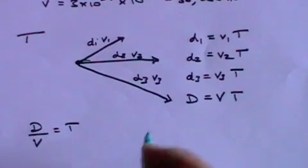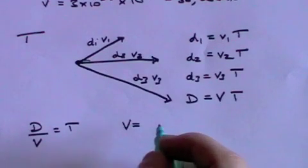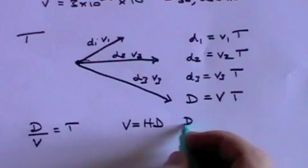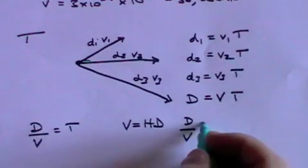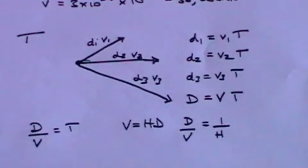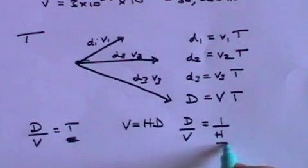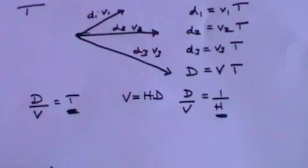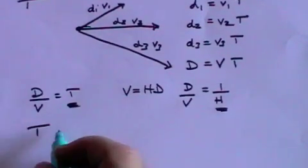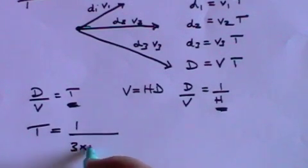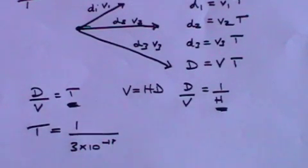But we know from Hubble's law that V equals HD, which means that D over V is 1 over H, and that means that T is 1 over H. So the age of the universe is 1 divided by Hubble's constant which is 3 times 10 to the minus 18 in seconds.